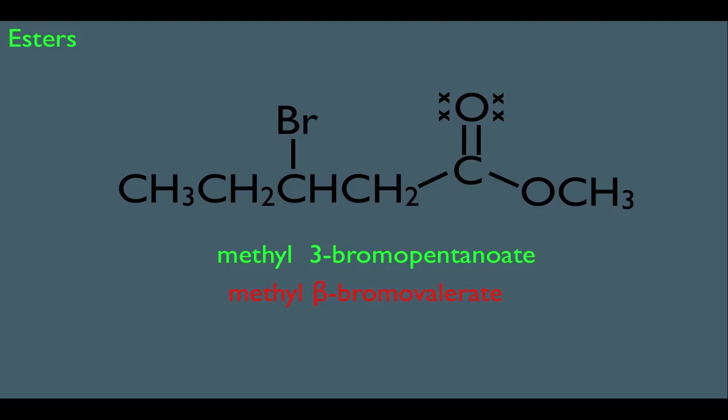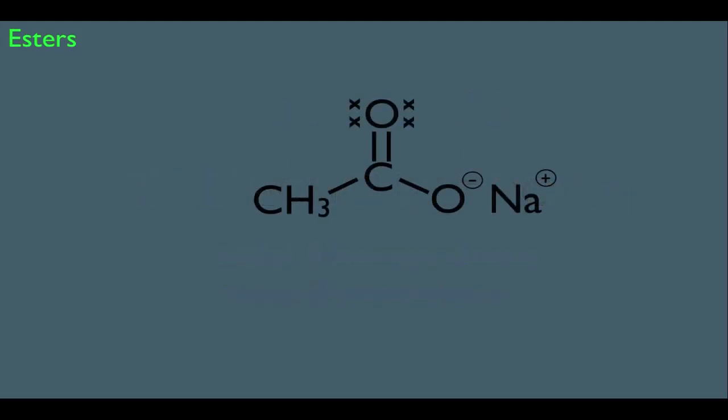While we're looking at esters, we should also know how to name this structure here. Although this is not an ester, it's actually the conjugate base of a carboxylic acid. If this were a carboxylic acid, it would have a hydrogen — if you removed the hydrogen, this is what would be left behind: a negative formal charge on the oxygen, making a salt with the Na ion. The reason we're discussing this now is because you name these almost like you would an ester.